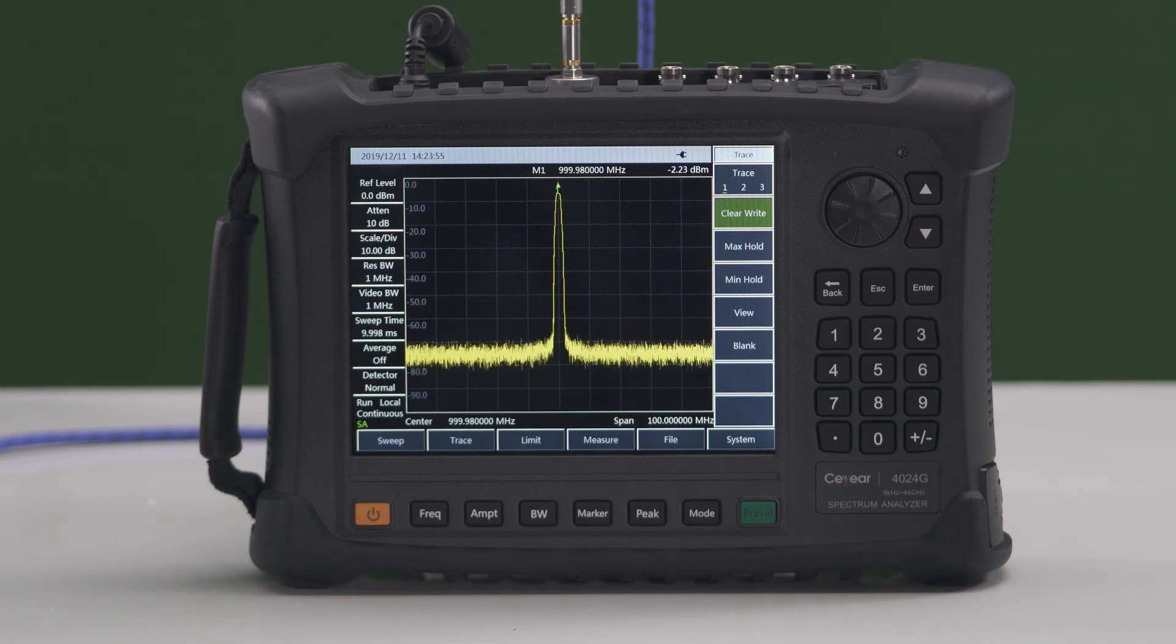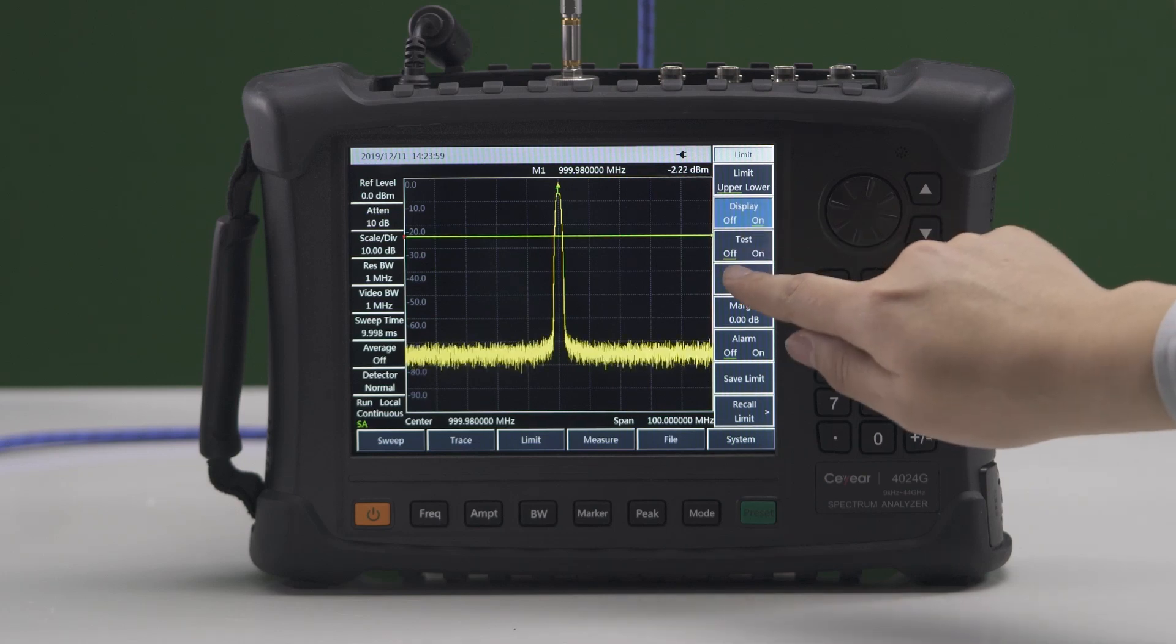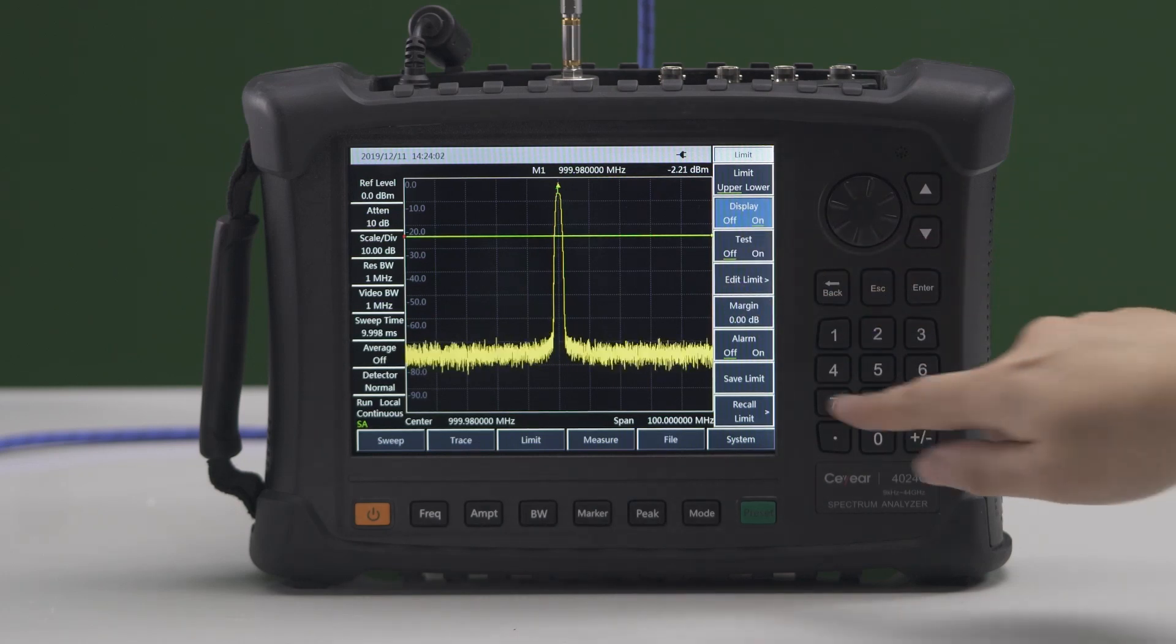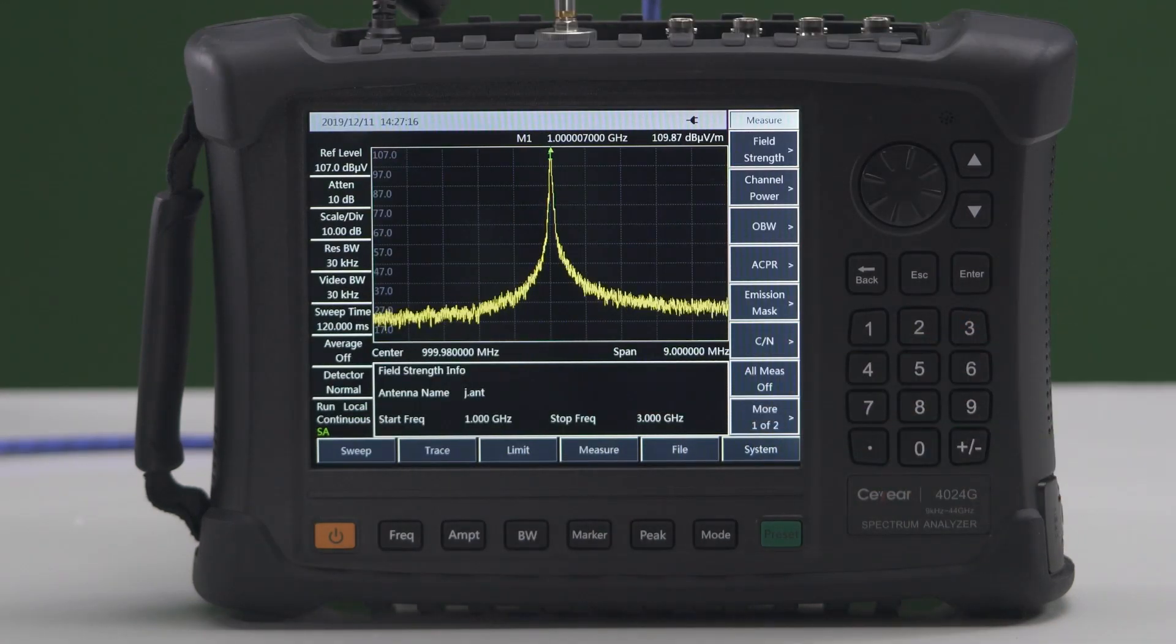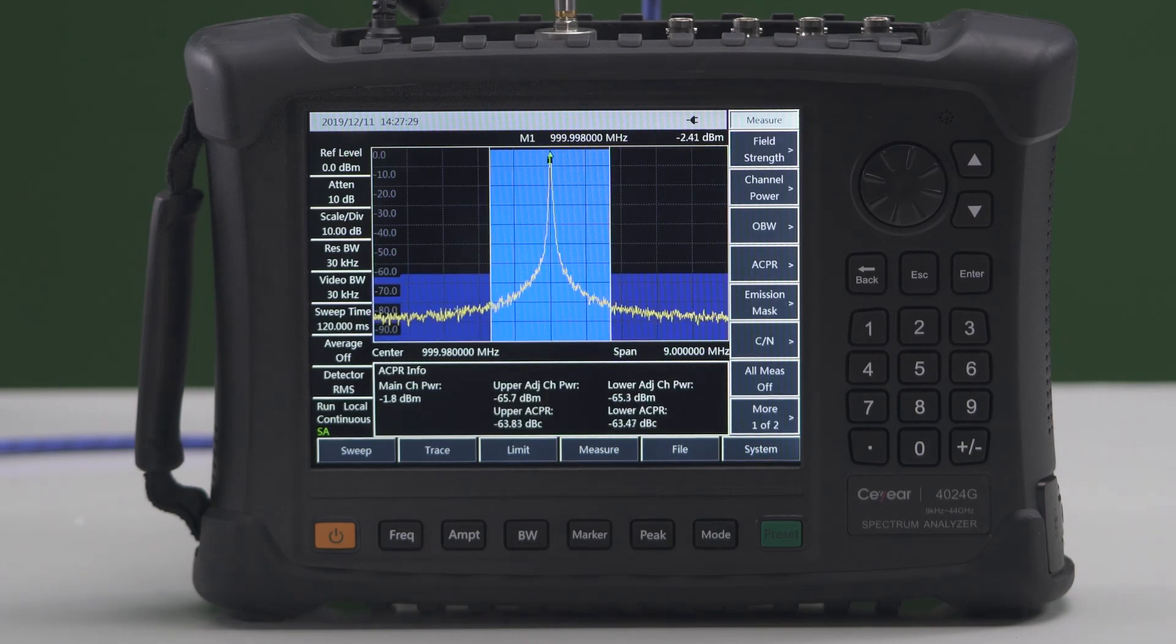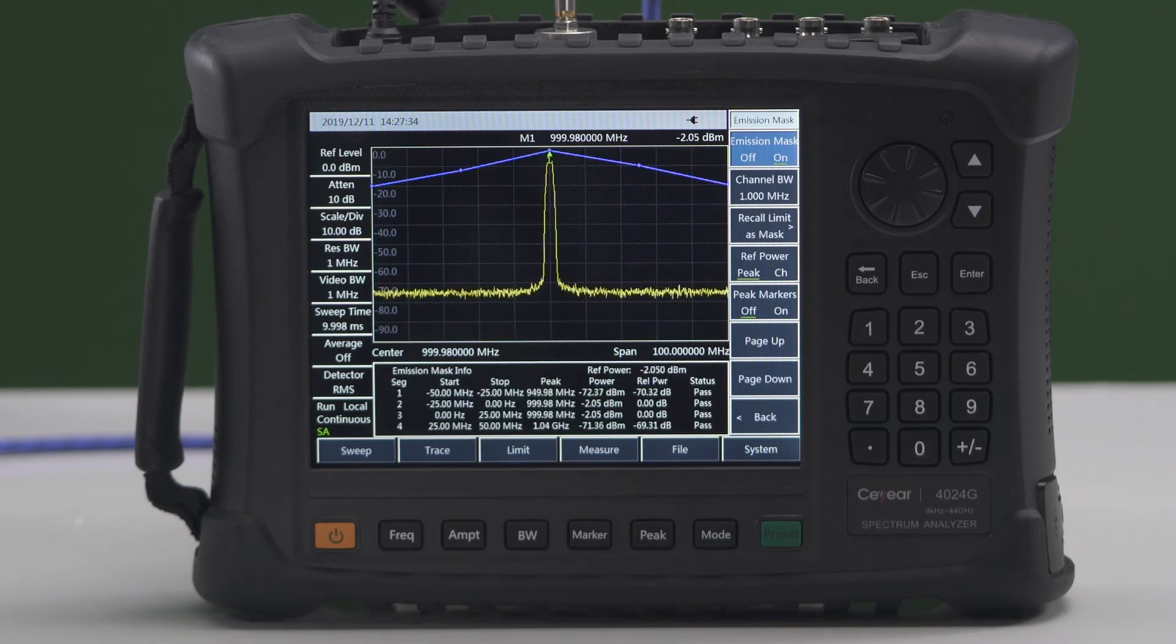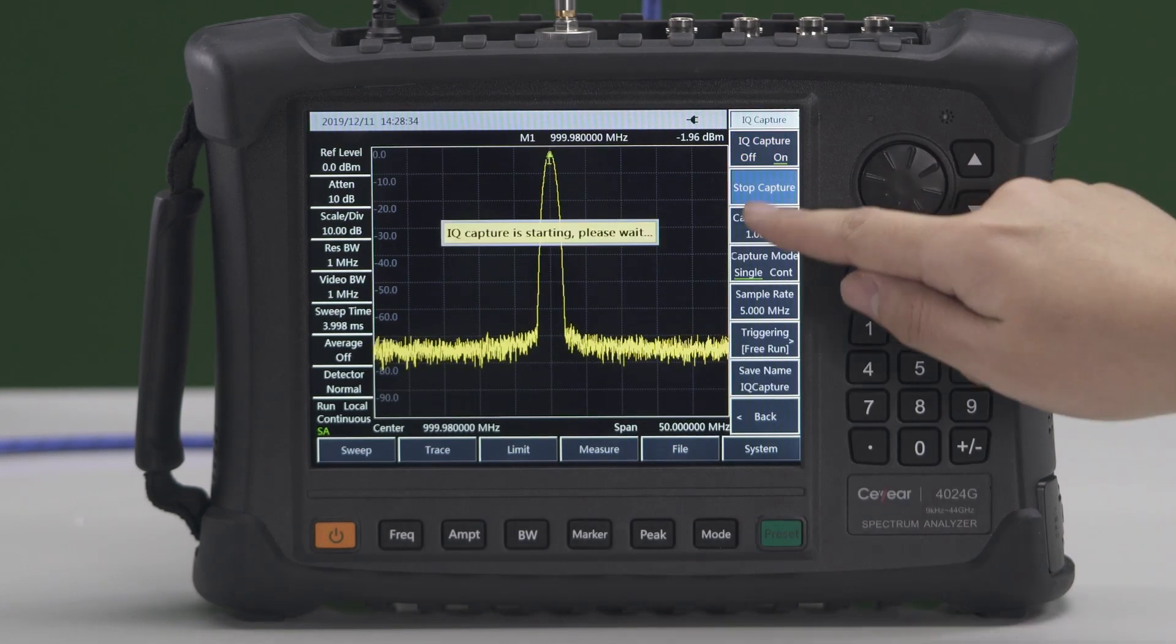The limit line function can help quickly alarm data points beyond a certain range. It also provides one-button measurement functions such as field strength measurement, channel power, occupied bandwidth, adjacent channel power, emission mask, carrier-to-noise ratio, audio demodulation, and IQ capture.